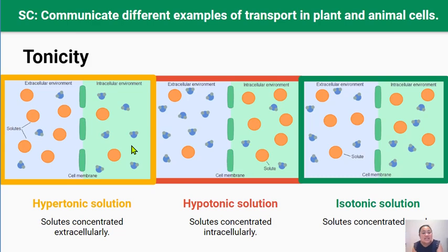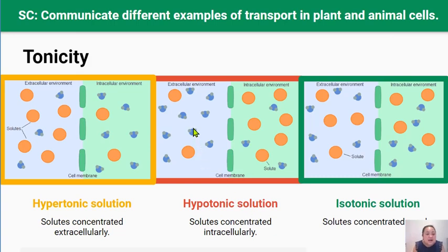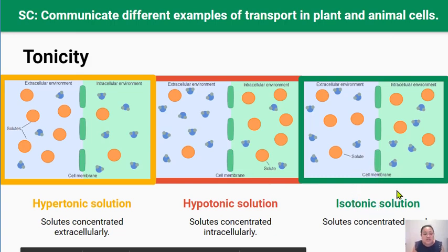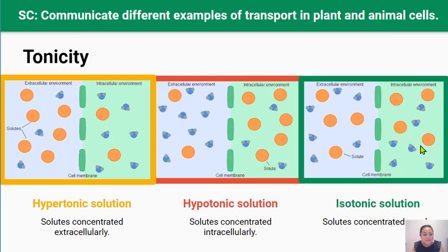In a hypertonic solution, the water concentration is higher in the cell, so water is going to want to move out of the cell and into the extracellular environment. A hypotonic solution is where there's a lower concentration of solutes on the outside of the cell than on the inside — hypotonic solutions are very dilute solutions. The water concentration is higher in the extracellular environment, so water will move into the cell. In an isotonic solution, solute concentration is equal on the outside and inside, so water concentration is the same on both sides and water is not really going to move anywhere.